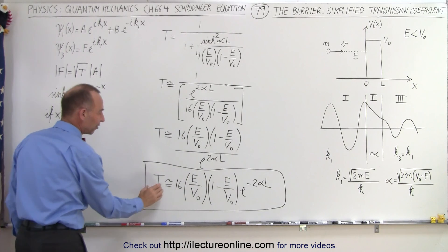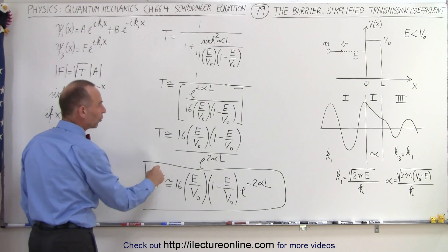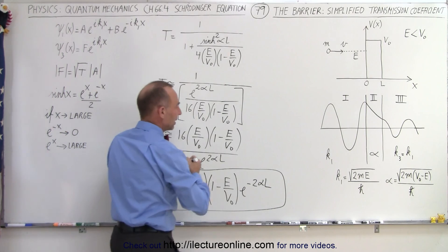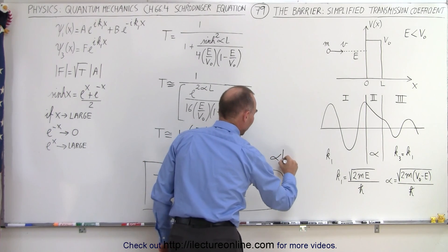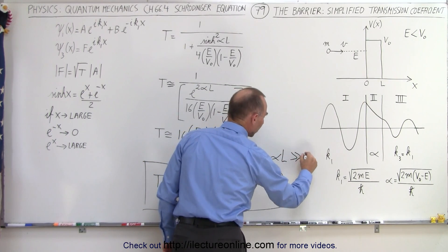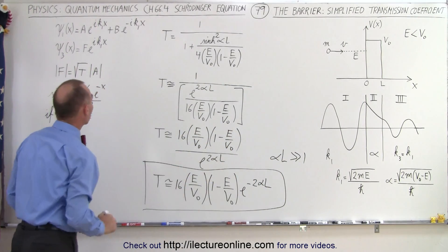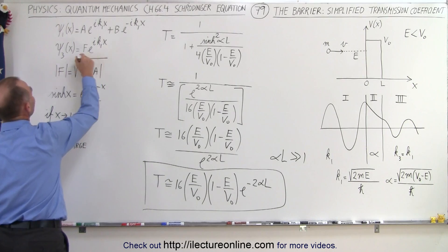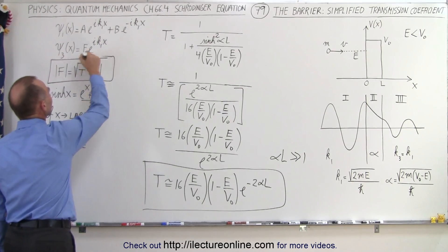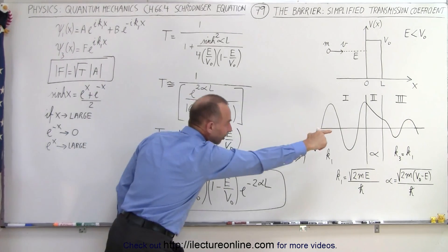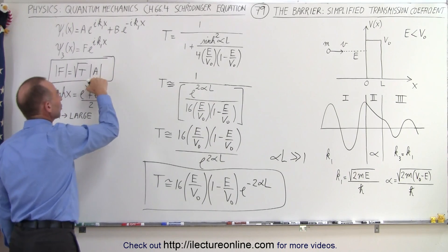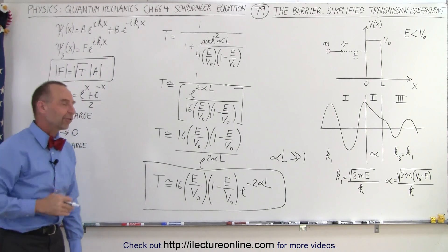Now that we have a simplified version of this equation, that's assuming that alpha times L is much, much larger than 1. If that's the case, this is a valid equation, easy to work with, and then we use that to find the amplitude of the oscillations of the particle on the other side of the barrier with respect to the amplitude that it had on the left side of the barrier.